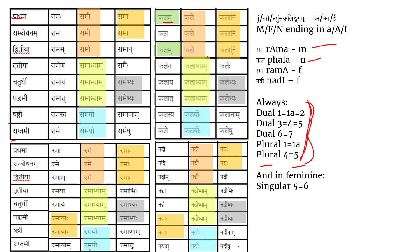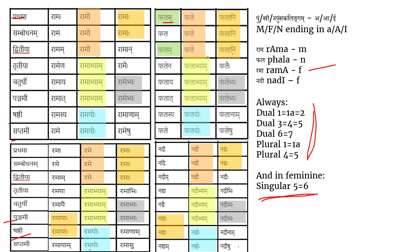For the feminine word ending in 'ā' (like Nadi or Rama in strīliṅga), the universal patterns hold. Additionally, in the singular (Ekavachanam), the fifth case (Panchami) and sixth case (Shashti) are the same — for example, Ramayaha and Ramayaha. This pattern holds for the feminine words shown in this group.